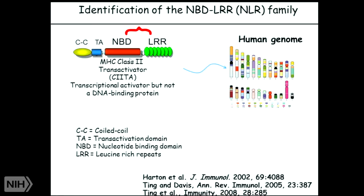Two people in my lab, John Harten and Mike Lindhoff, decided that C2TA is such an important protein because you can put it on any cell and they will express Class II MHC, which is remarkable. They used the two domains — the Nucleotide Binding Domain and the leucine-rich repeat — and searched the human genome before it was published, and came up with 22 genes. We named it Caterpillar for a long reason I won't tell you about, but now it's renamed either NBDLR or NOD-like receptors.